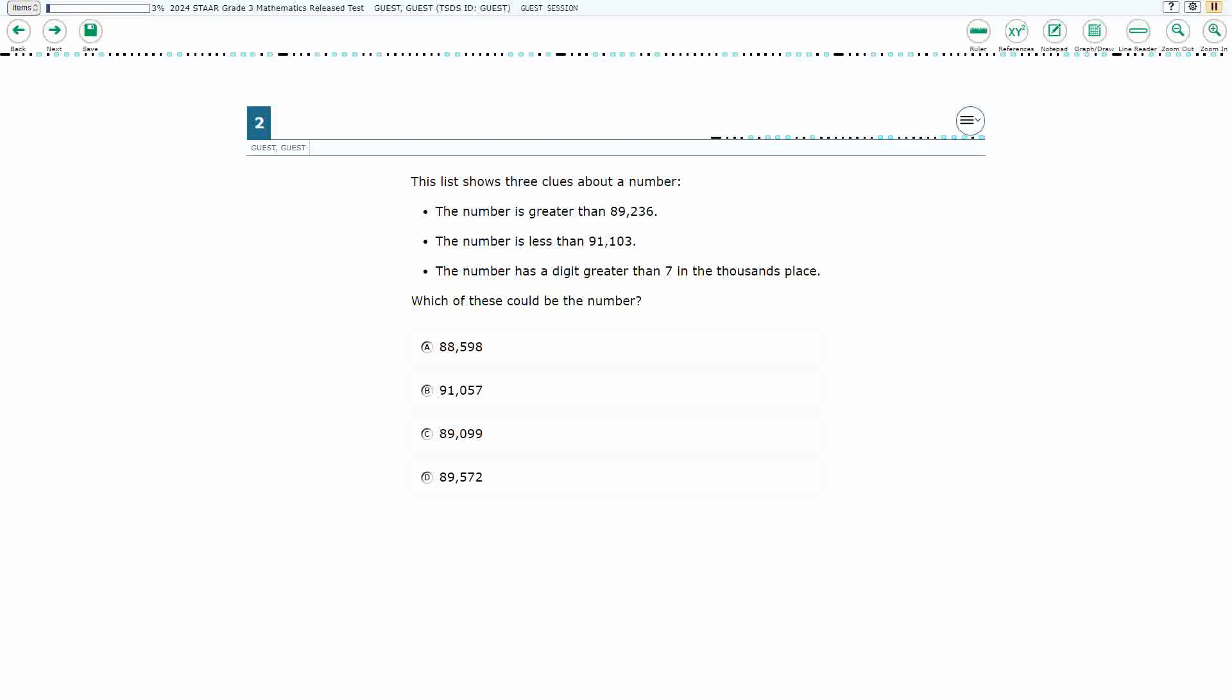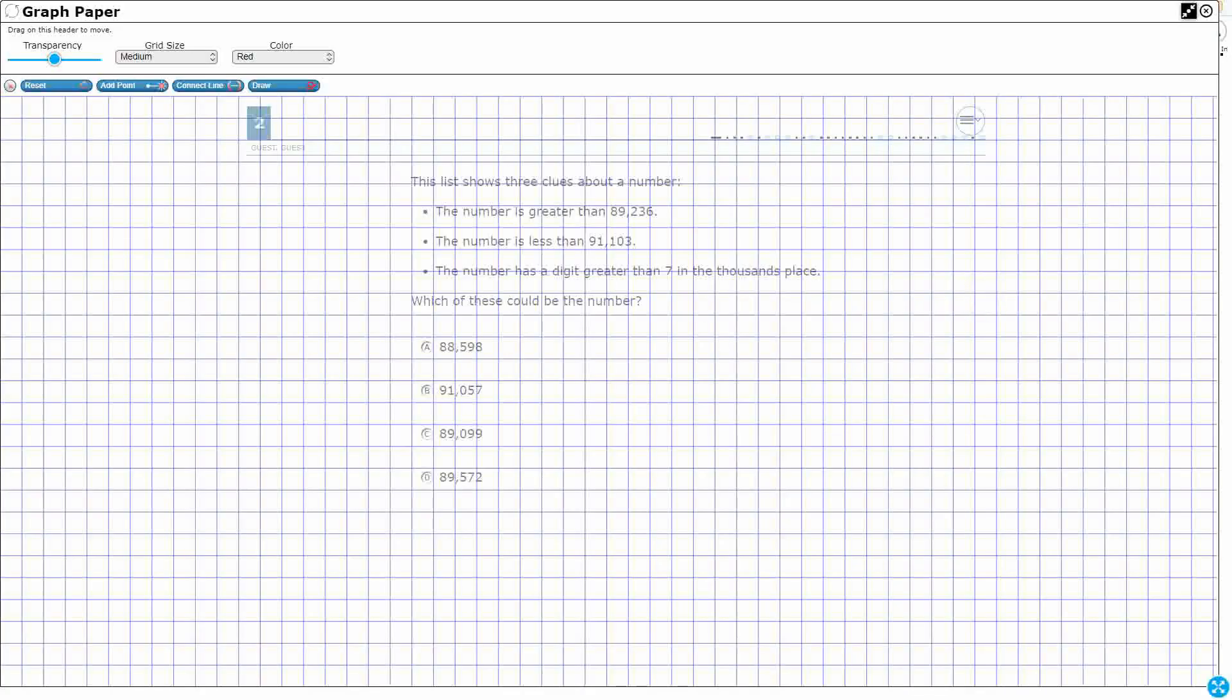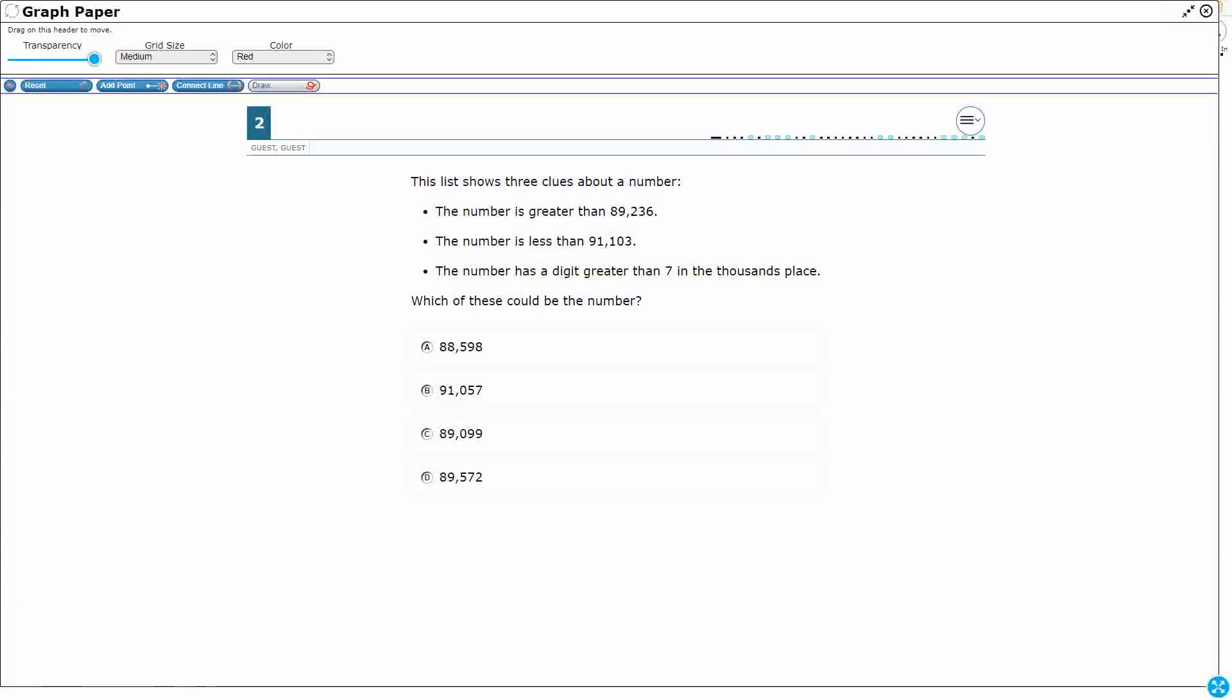All right, so we have a mystery number that we need to solve for. I'm going to open up my graph draw feature, turn up the transparency so I can just draw all over this. We have three clues. It's going to be greater than and less than. So they're going to give us two different boundary numbers. So let's draw a number line here. I wonder if we can probably eliminate some of these numbers simply because they don't fall within these first two clues. The last one will kind of really help us solidify our answer.